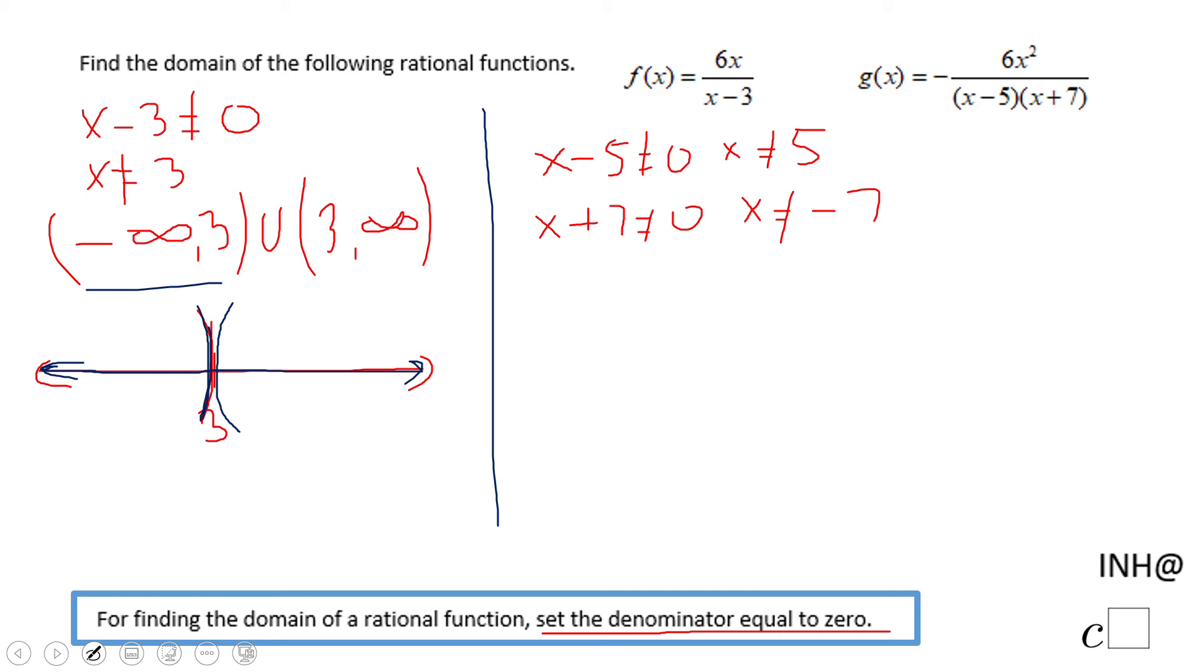Interval notation will be negative infinity, and then the first number in this set will be negative 7. Negative 7, union, negative 7, 5, union, 5, infinity.